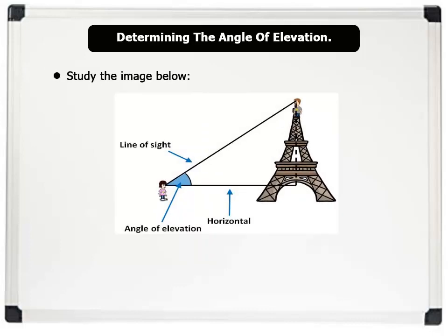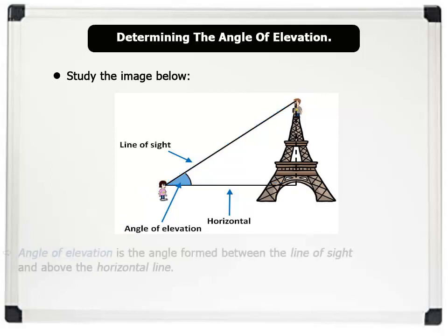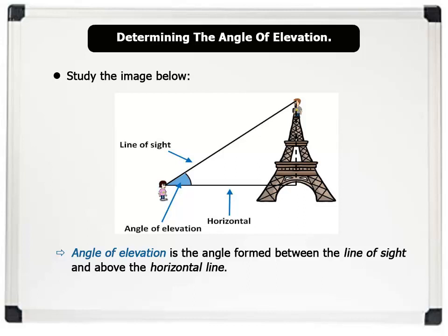Now let us discuss the angle of elevation. Looking at the image on the board, the boy looks in a horizontal direction to the tower. But when he wants to see his friend at the top of the tower, he raises his line of sight. The angle formed while raising his eyesight is called the angle of elevation. Therefore, the angle of elevation is the angle formed between the line of sight and above the horizontal line.